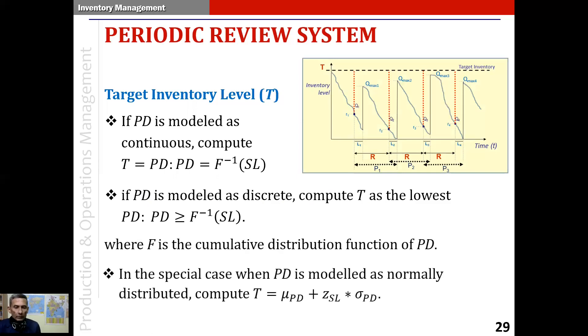In the special case when protection period demand is modeled as normally distributed, we compute T as μ_pd plus z of the service level multiplied by σ_pd.